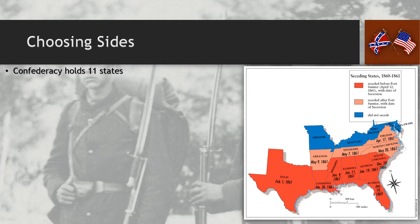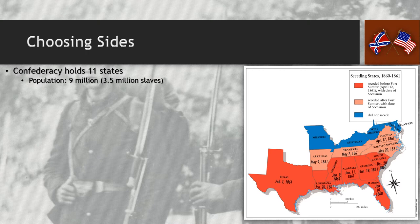When it comes to the Confederacy, they end up holding 11 states throughout the duration of the conflict. All of the red states you see here remain part of the Confederacy from the very beginning — they secede from the Union before Fort Sumter is fired upon. The pink states above them secede after Fort Sumter is fired upon. The blue states are border states that traditionally had slavery but never secede from the Union, instead overturning slavery and remaining part of the Union. The population of the Confederacy is estimated at about 9 million people.